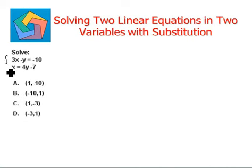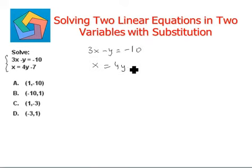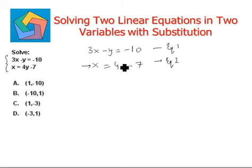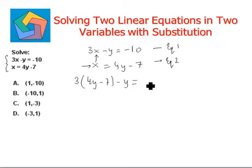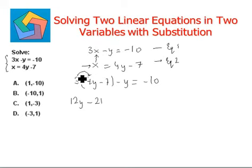Let's do the next question. Solve: 3x minus y equals negative 10, and x equals 4y minus 7. This is equation 1 and this is equation 2. We see that we are given the value of x in terms of y in the second equation, so we plug this into the first equation. So: 3 times 4y minus 7, minus y equals negative 10. Applying the distributive property: 3 times 4y is 12y, and 3 times negative 7 is negative 21, minus y equals negative 10.